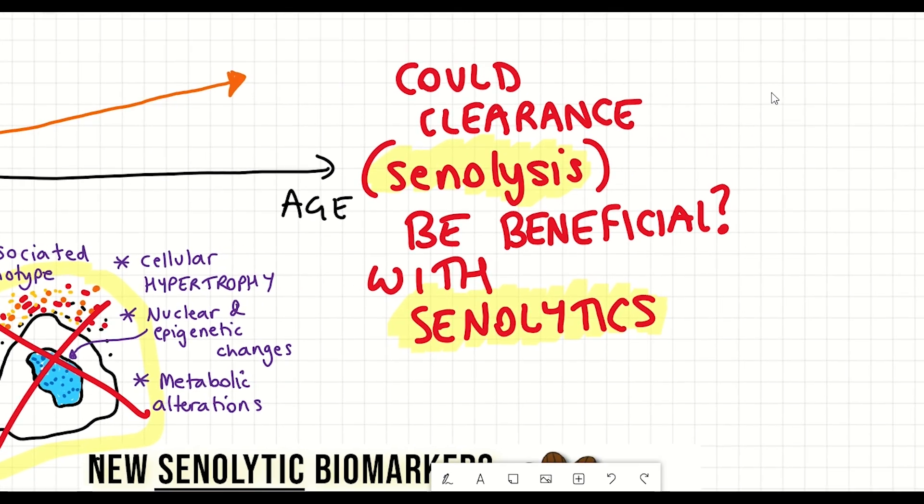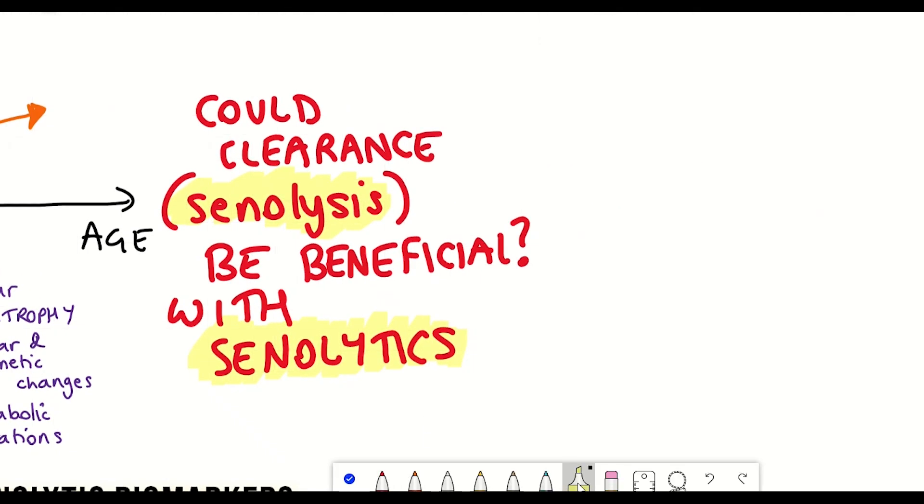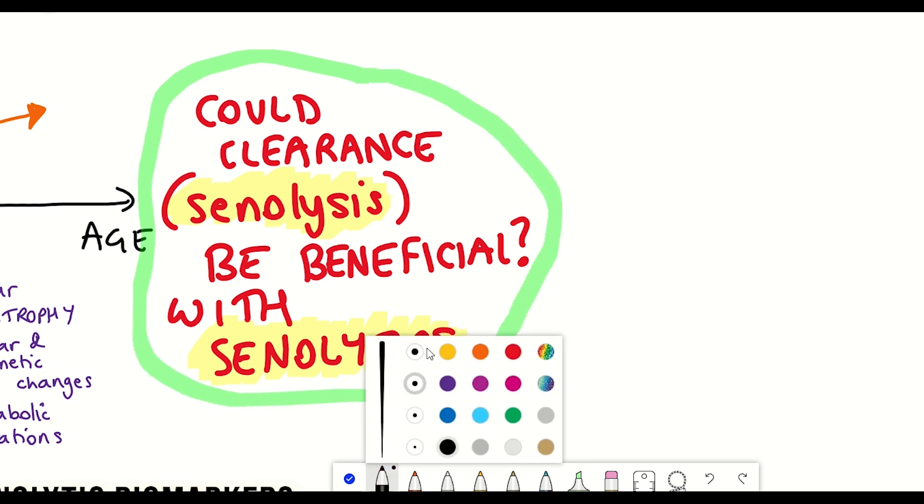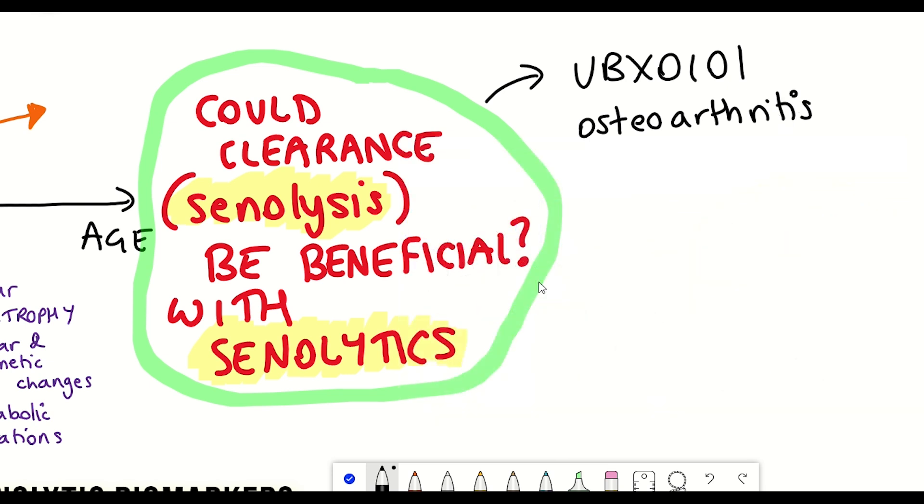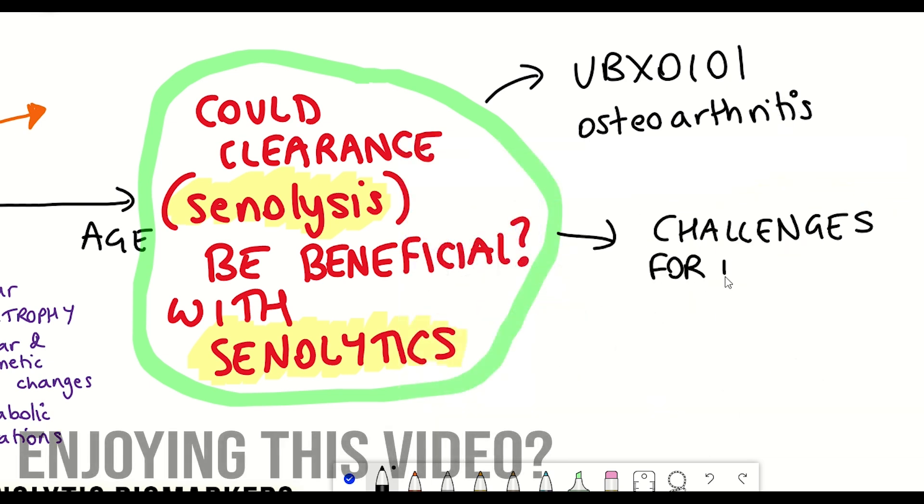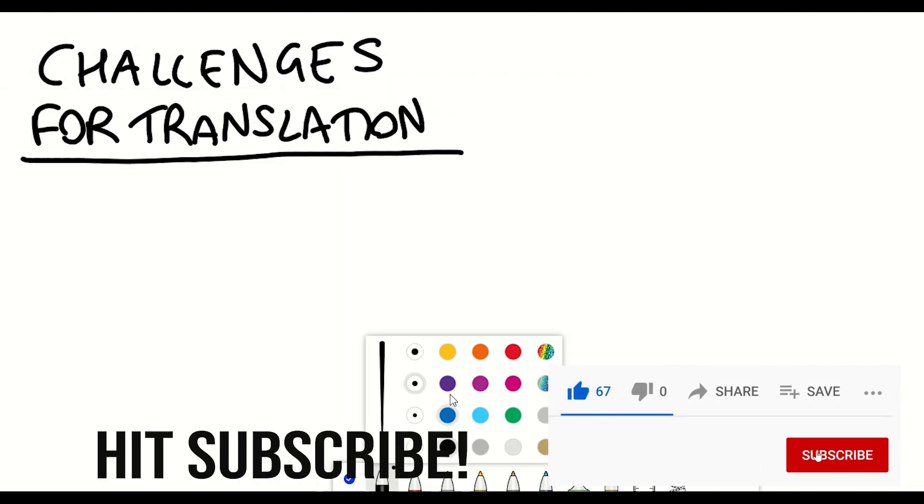However, the efficacy of removing senescent cells for therapeutic use has had some setbacks in terms of being able to translate this idea to human use, most notably being the early clinical failure seen in Unity Biotechnology's UBX0-101 for the treatment of osteoarthritis.